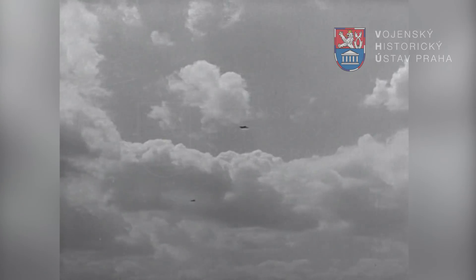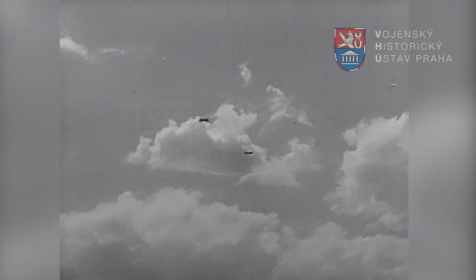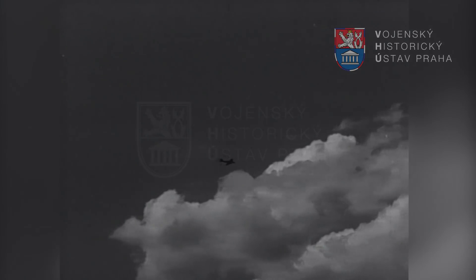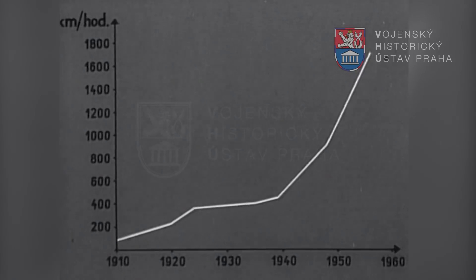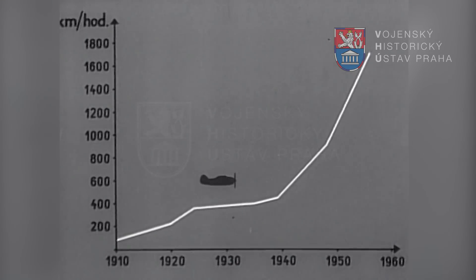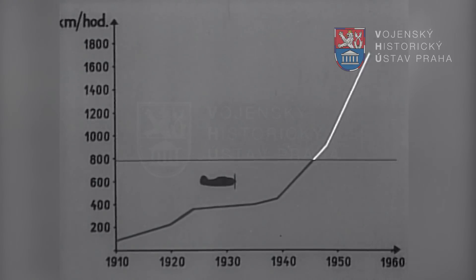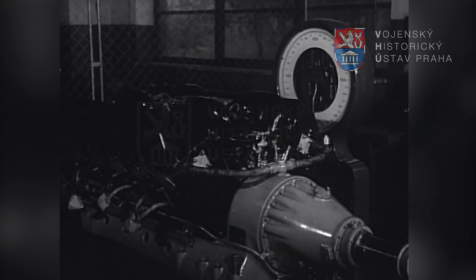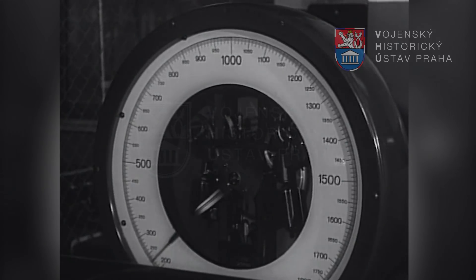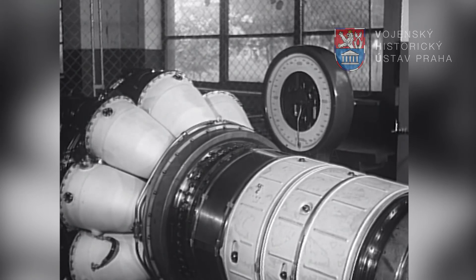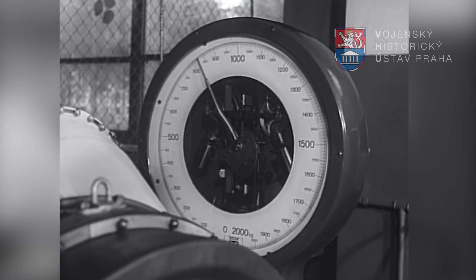Nejvýraznější srovnání proudového a pístového motoru je podle rychlosti. Letouny s turbokompresorovými motory jsou mnohem rychlejší než letouny s pohonnou jednotkou pístový motor plus vrtule. Pístový motor není schopen plnit zvýšené požadavky letecké techniky pro vysoké rychlosti letu nad 780 km za hodinu. V tomto směru patří budoucnost proudovým letounům. Pístové motory vážící přes 1000 kg mají výkon necelých 2500 KS, kdežto turbokompresorový motor o výkonu 10 000 až 12 000 KS váží méně než 1000 kg.